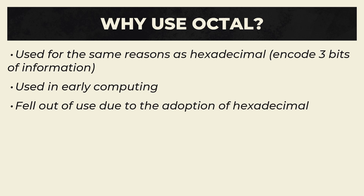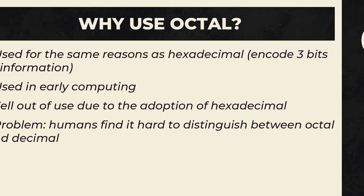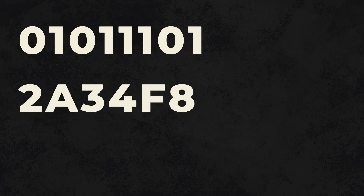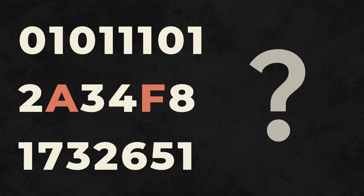In fact, there was one big problem: humans find it hard to distinguish between octal and decimal. Binary is generally easy to spot because there are always strings of 1s and 0s. Hexadecimal is a bit harder, but seeing a letter in your number is a pretty good tip-off. However, because octal and decimal share many of the same digits, it's often hard to tell if a number is octal or decimal, which led to no end of frustration while researching this video.